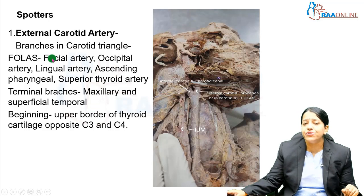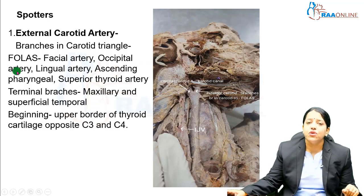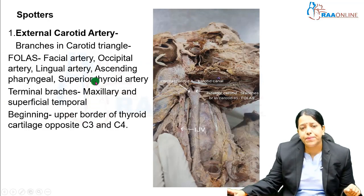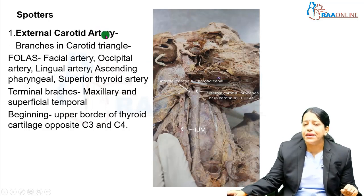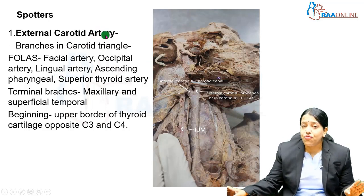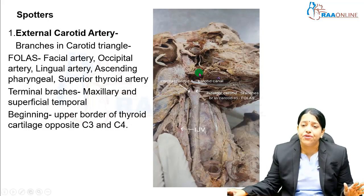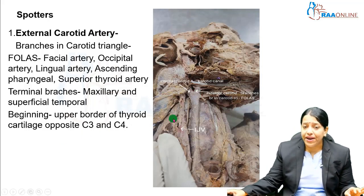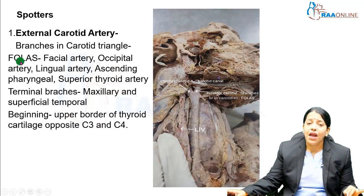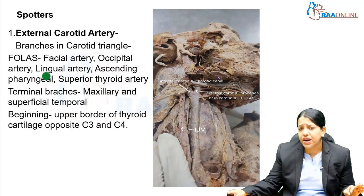The other branches of the external carotid artery are given above the carotid triangle. A very important tag question can be the level of formation — that is, the level of termination of the common carotid artery. The level is important, as is the next question about branches within the carotid triangle.